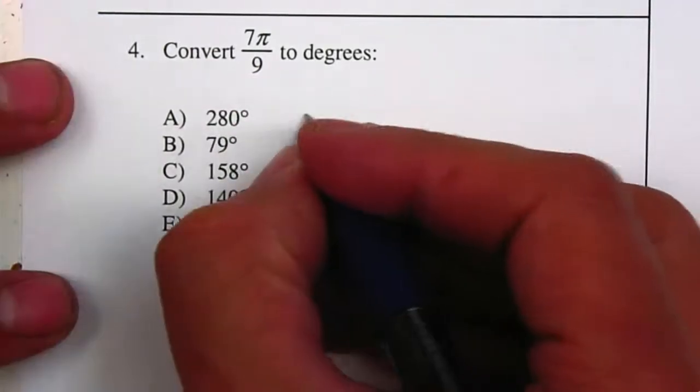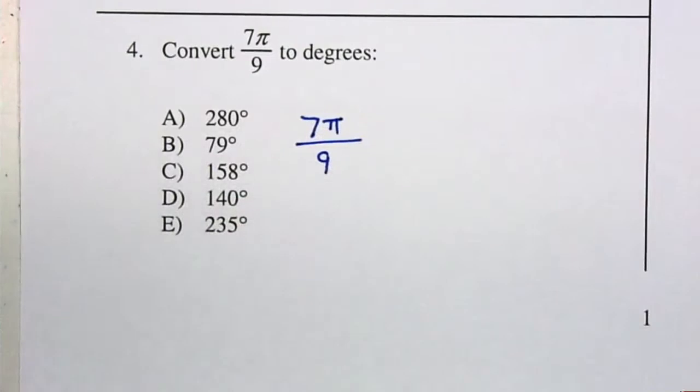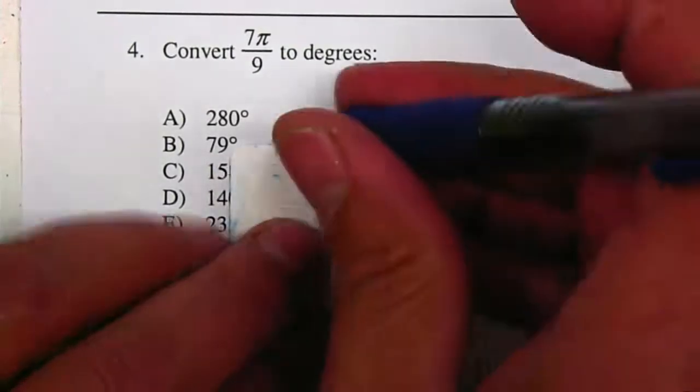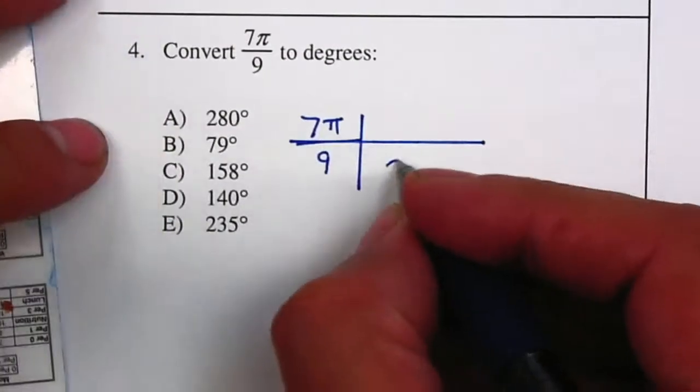I'm now going to use my table for conversions. 7π/9, I'm now going to extend my fraction bar. My pi is on top, so therefore I'm going to place my pi on the bottom.